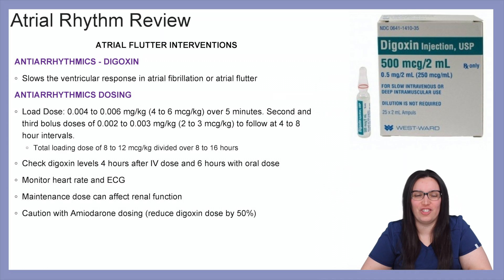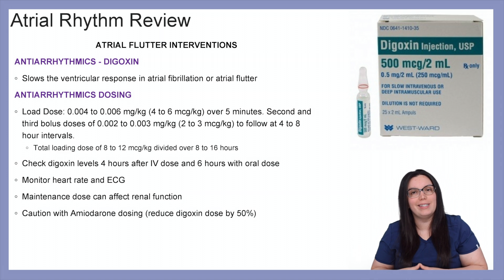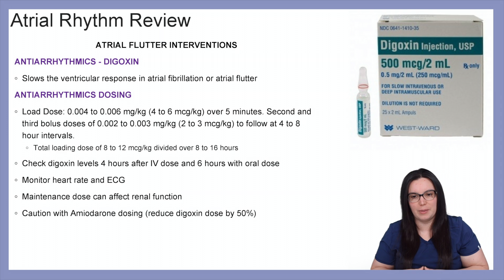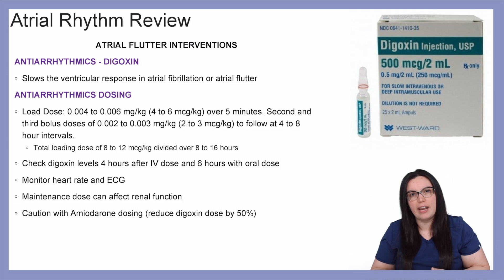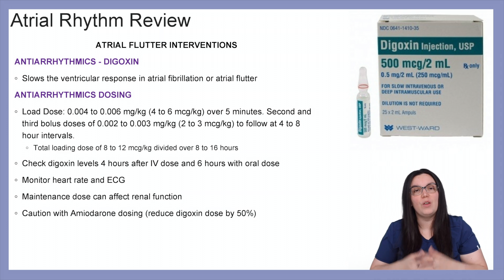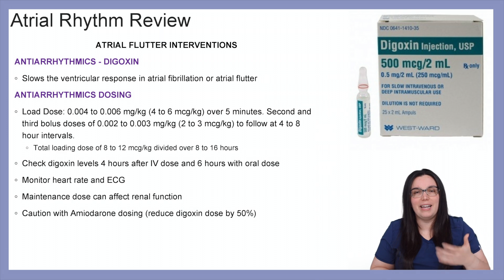The antiarrhythmic digoxin slows down the ventricular response in atrial fibrillation or atrial flutter. The low dose is 4 to 6 micrograms per kilogram over 5 minutes; second to third doses are 2 to 3 micrograms per kilogram at 4 to 8 hour intervals. Total loading doses of 8 to 12 micrograms per kilogram are usually divided over an 8 to 16 hour period. Check digoxin levels every 4 hours after IV doses and every 6 hours after oral doses, and monitor heart rate and rhythm for abnormalities. Maintenance doses can affect renal function, so monitor intake and output.